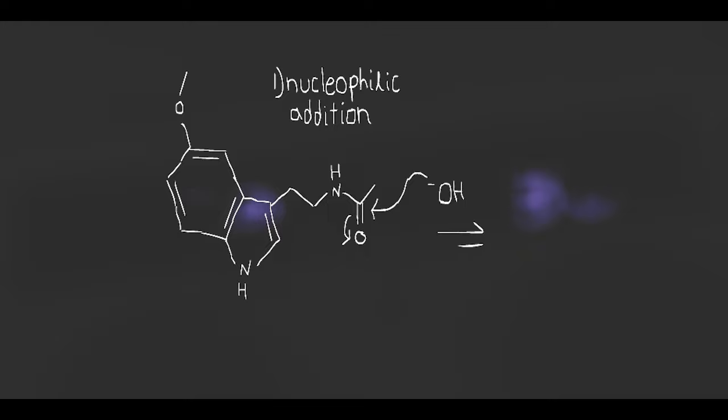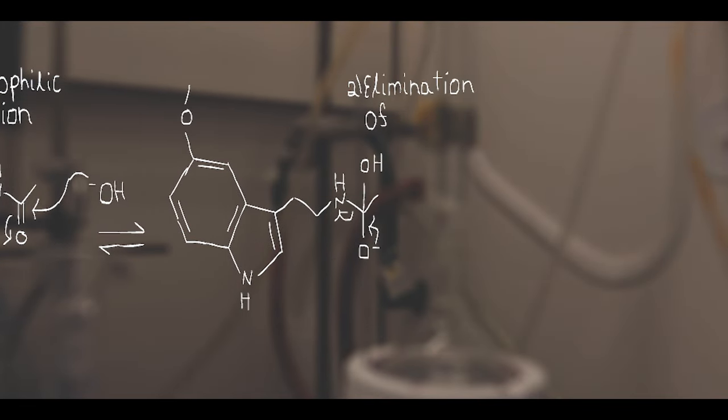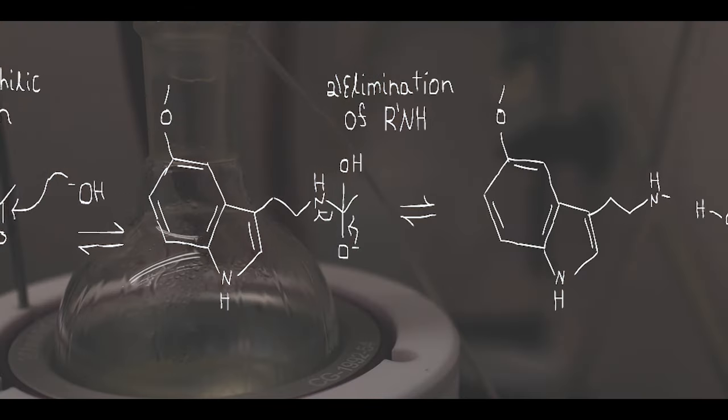During this process, a base-catalyzed hydrolysis is occurring, beginning with the nucleophilic addition of the hydroxide ion to the carbonyl group of the secondary amine. The conjugate base of the amine is kicked off from the tetrahedral intermediate as electrons from the oxygen push down to the central carbon, bringing the bond between it and the nitrogen.